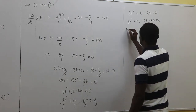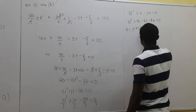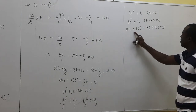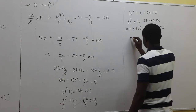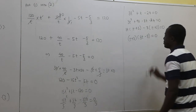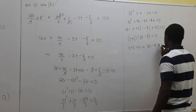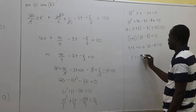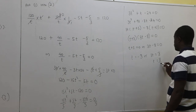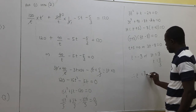Factorizing: 3T(T + 3) − 8(T + 3) = 0, so (T + 3)(3T − 8) = 0. Therefore T = −3 or T = 8/3. Since time cannot be negative, T = 8/3 hours.